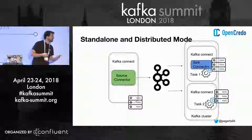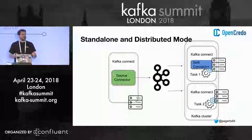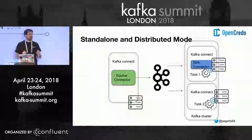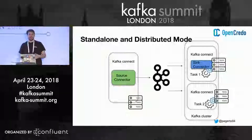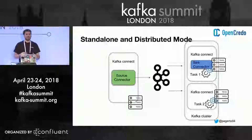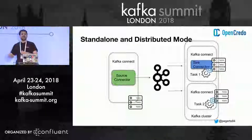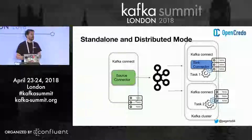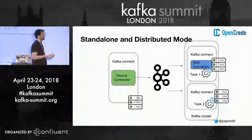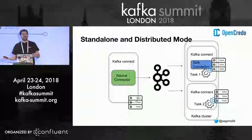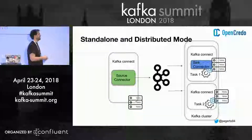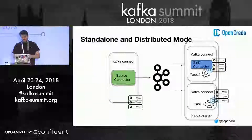Before going into the code details, we need to talk about standalone versus distributed mode. For those running Kafka Connect: who runs it in standalone and who in distributed? The idea of distribution is: it's fine to have Kafka Connect in standalone, especially if you're running containers and can deploy individual Kafka Connect instances with a specific task. You can also have a distributed cluster that allows you to scale as well as have fault tolerance. In distributed mode, tasks can be split across different workers, and if a worker fails, there's a rebalance — the task moves to a live worker.